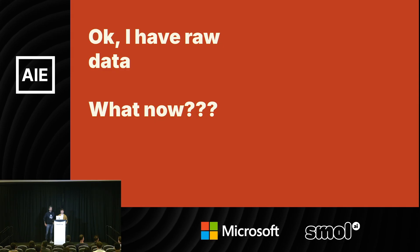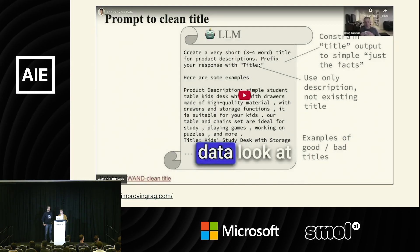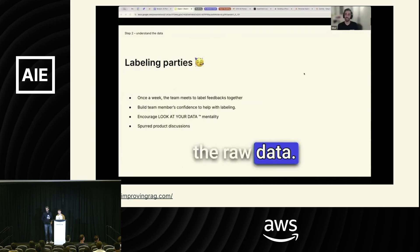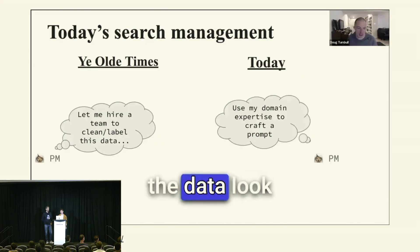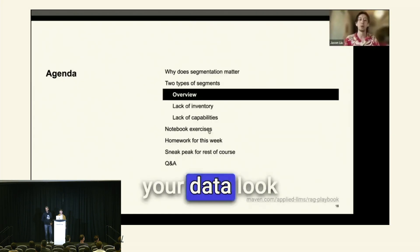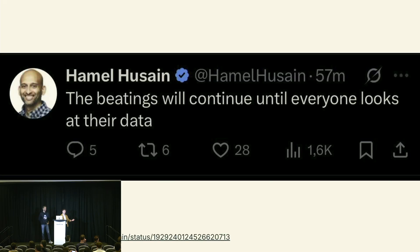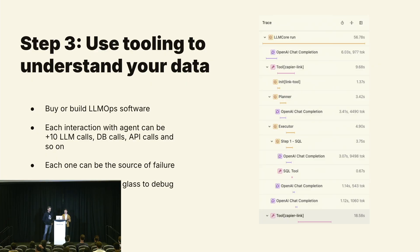So you have raw data — what now? We believe the first step is to either buy or build LLM ops software — we do both. You're definitely going to need that to understand your agent runs, because one agent run is probably multiple LLM calls, multiple database interactions, tool calls, REST calls. Each one can be a source of failure, and it's really important to piece together the whole story to understand what caused a cascading failure.